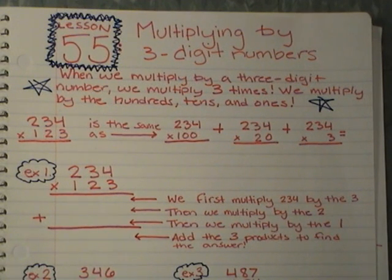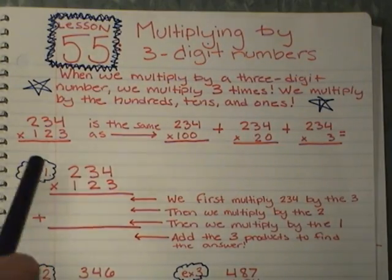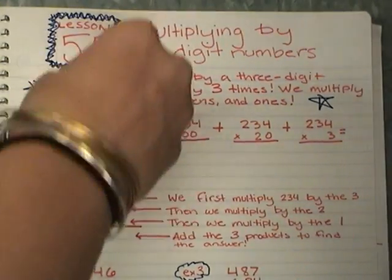Alright, tonight's lesson is lesson 55 and we are multiplying by three digit numbers. Now we just did this before a couple days ago when we were multiplying by two digit and now we're doing it by three digits. So it's kind of the same, just one more step. Go ahead and write this down and this is very important to remember.